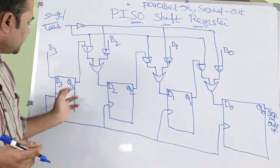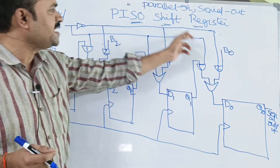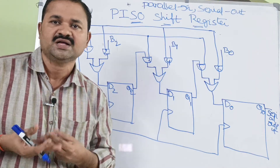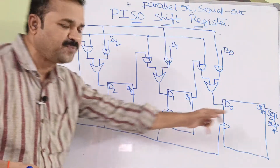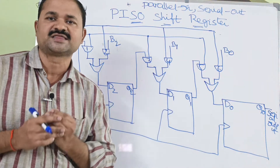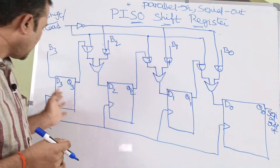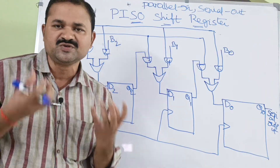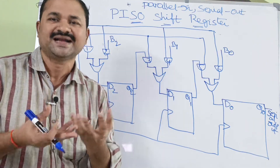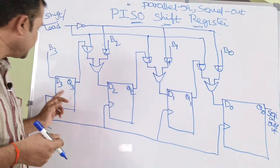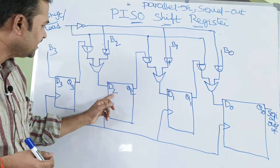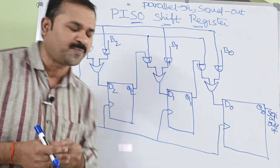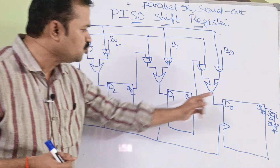This is the diagram for a 4-bit PISO shift register. A register is a collection of flip-flops. Here we have 4 flip-flops where we are using D flip-flops. D stands for data, and by using D flip-flops we can store the data. The inputs of the flip-flops are D3, D2, D1, D0, whereas the outputs are Q3, Q2, Q1, Q0.